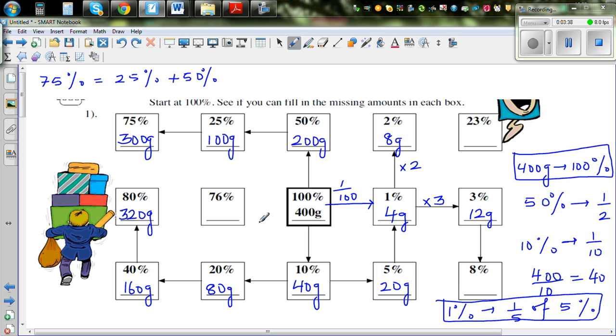I want to find 76%. How can I find 76%? You can do this in different ways. 76% is, let me write this with a different color, 76% equals which percent plus which percent? Well, that is 75% plus 1%.